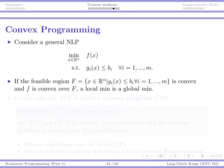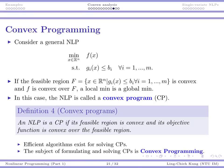In general, for a nonlinear program: if the feasible region is convex and the objective function is convex, then a local minimum is a global minimum. This is the most important property. We give it a special name: an NLP is called a convex program (CP) if the feasible region is convex and the objective function is convex over the feasible region. Technically, minimizing a convex function or maximizing a concave function are equivalent, so both are called convex programs.